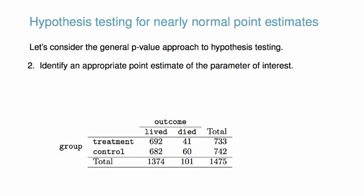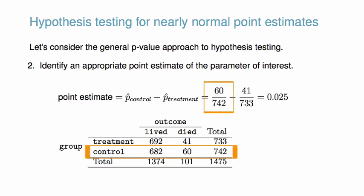Second, we must identify an appropriate point estimate of the parameter of interest. Our point estimate is the estimated proportion of deaths in the control group minus the estimated proportion in the treatment group, which is 0.025 in our example. That is, the death rate in the control group was about 2.5% higher than the death rate in the treatment group.